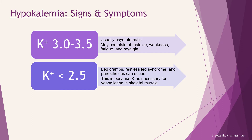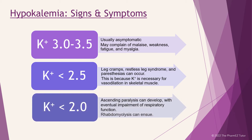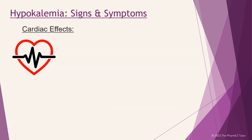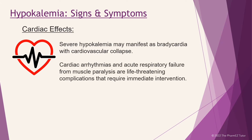When the potassium level reaches less than 2.5, leg cramps, restless leg syndrome, and paresthesias can occur, because potassium is necessary for vasodilation in skeletal muscle. When the potassium reaches less than 2.0, ascending paralysis can develop with eventual impairment of respiratory function, and rhabdomyolysis can ensue. Severe hypokalemia may manifest as bradycardia with cardiovascular collapse. Cardiac arrhythmias and acute respiratory failure from muscle paralysis are life-threatening complications that require immediate intervention.